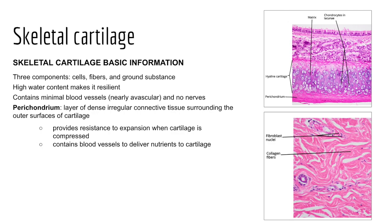The ground substance is hydrated, making cartilage very compressible. Cartilage doesn't have nervous tissue and contains only minimal blood vessels, so it relies on nearby tissue for the exchange of nutrients, wastes, and gases. Cartilage is covered by a layer of dense irregular connective tissue called perichondrium — remember, chondro and chondrium refer to cartilage, which will help you differentiate this from bone-related terminology coming up.